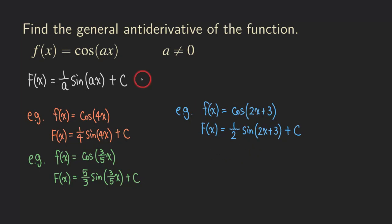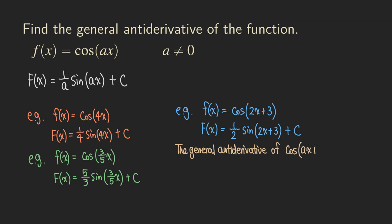We can write a more general formula. The general antiderivative of cosine of (ax + b), where a cannot be 0, is (1 over a) times sine of (ax + b) plus C. We copy all the exact same stuff from the cosine into the sine, multiply by the reciprocal of the coefficient of x, and add the constant. Both a and b are real numbers, but there is no restriction on b.